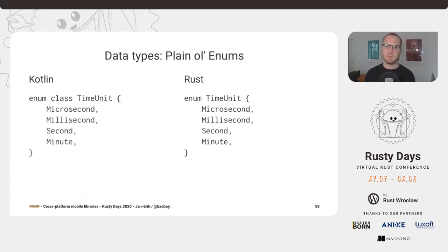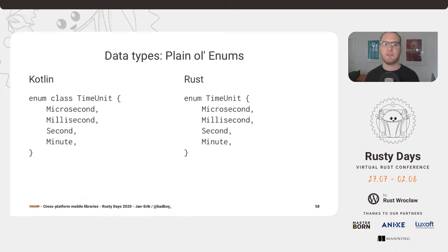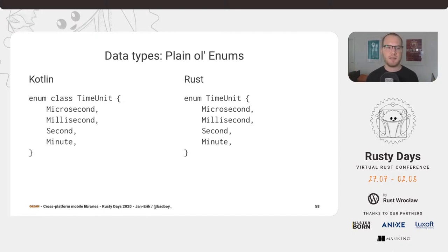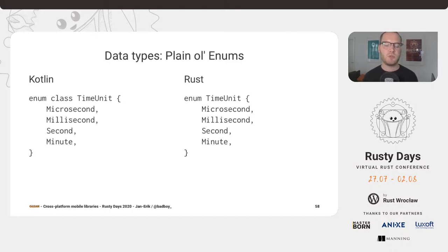The next thing is enums. Plain old enums are just a list of variants — essentially each variant has an integer representation. For now, we're just using this integer representation: we convert it to the integer and turn it back into the enum on the Rust side. There's one little detail that makes this a hassle — we need to ensure that both the Kotlin side and the Rust side agree exactly about the order of variants in the enum and the values. Luckily, if you don't tell them otherwise, they will both start counting at zero. We need to do this translation all manually, but this is certainly a part we could automate eventually.